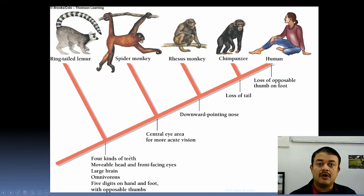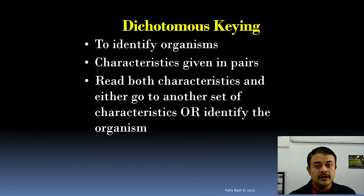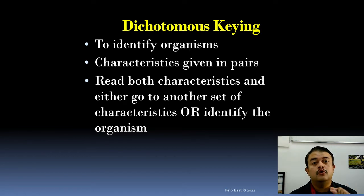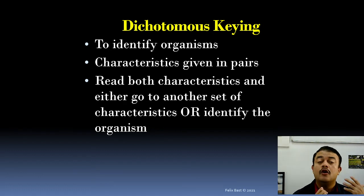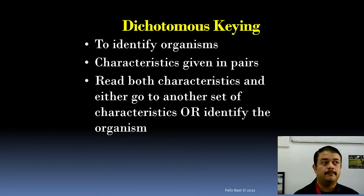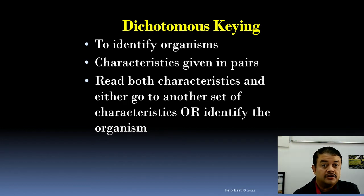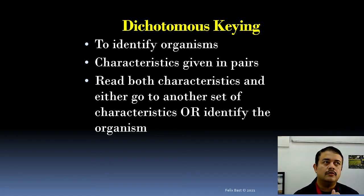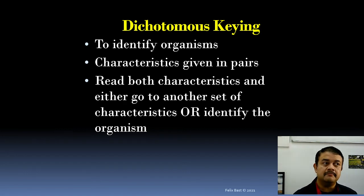The synapomorphic characters shown as tick marks are what we use for classifying plants and animals. In taxonomy we use dichotomous keying to identify organisms — a table with two options: if option A go to one number, if option B go to another. These are characteristics given in pairs; read both and either go to another set of characteristics or identify the organism. For example, how many colpi are in the pollen grain — bicolpate or tricolpate — leads you to identify angiosperms. Early in the key these are deeply conserved characters; later they become less conserved.